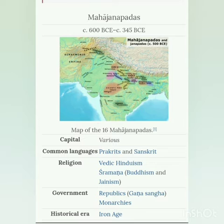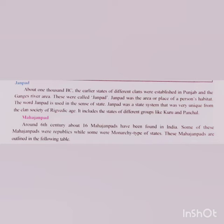Now let us study Janapada. As per the Vedic texts, Aryan tribes were known as the Janas, which were the largest social units. The term Janapada is composed of Jana, meaning people or subjects, and Pada, meaning foot. Janapadas were the earliest gathering places of men.